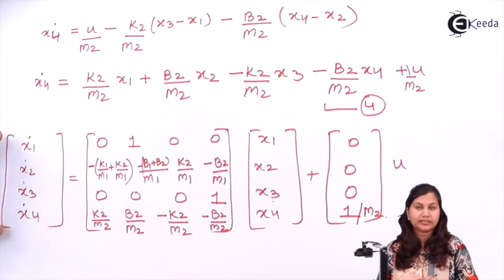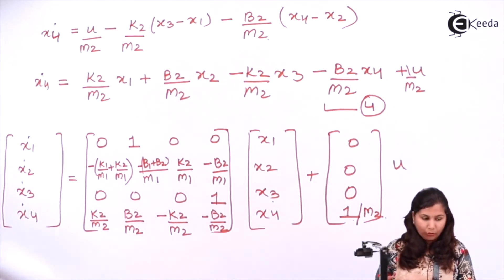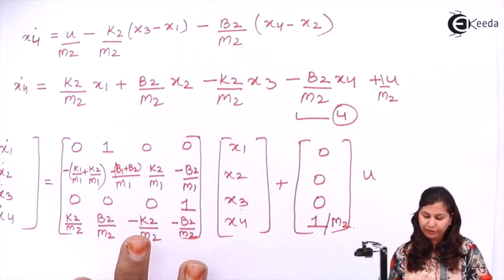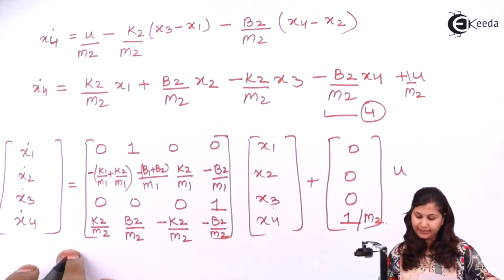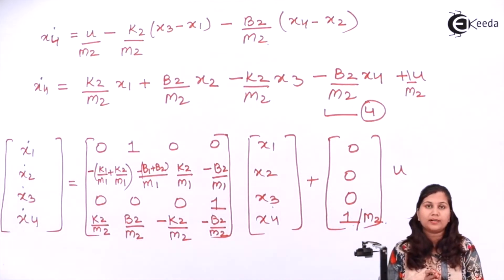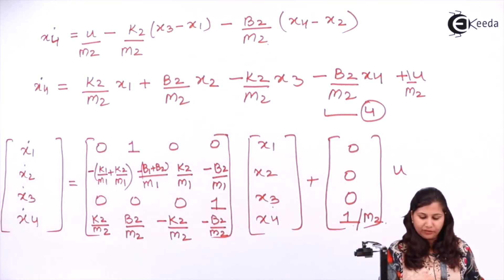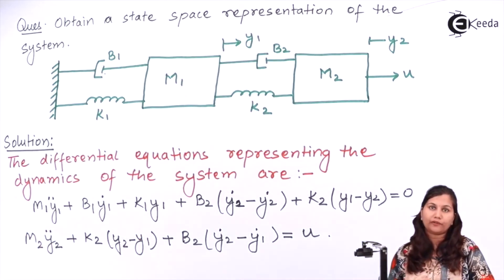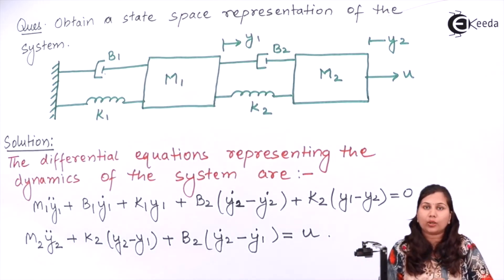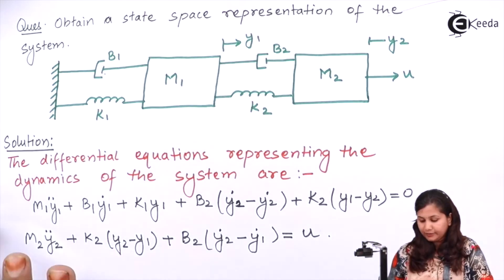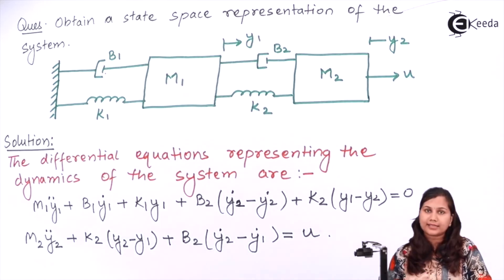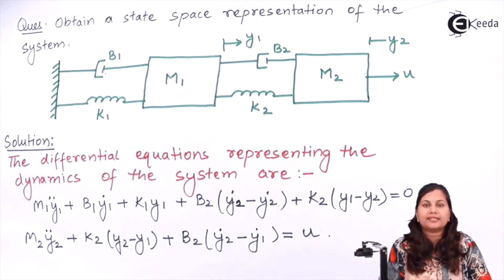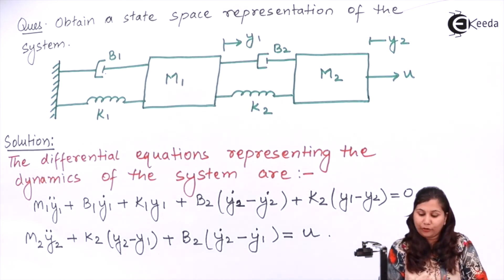This state equation represents the state space model of the system. Since no output equation was specified, we only write the state equation. To summarize: for a mechanical system, first write the nodal equations to get the mathematical model, then choose position and velocity as state variables, replace all variables in the differential equations with state variables, and use those equations to obtain the state space representation.